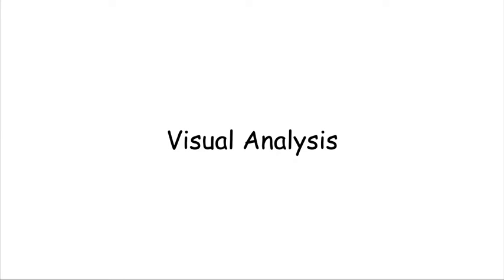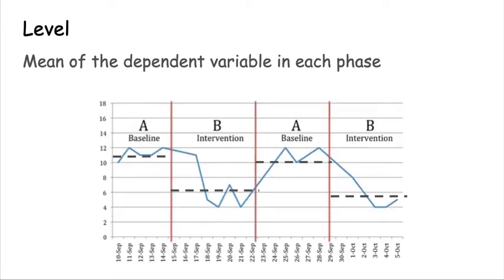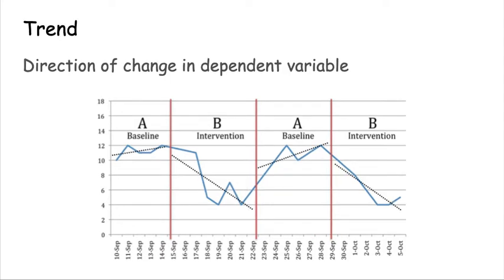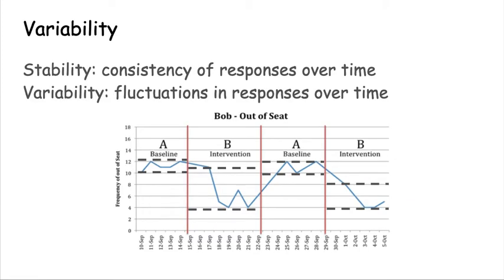Visual analysis is a subjective approach to analyzing data that looks for changes in level, trend, or variability between phases. Changes in level refer to changes in the mean value of the dependent variable between phases. Changes in trend refer to the overall direction of change in the dependent variable within each phase. Changes in variability refer to the consistency of the variable within each phase.